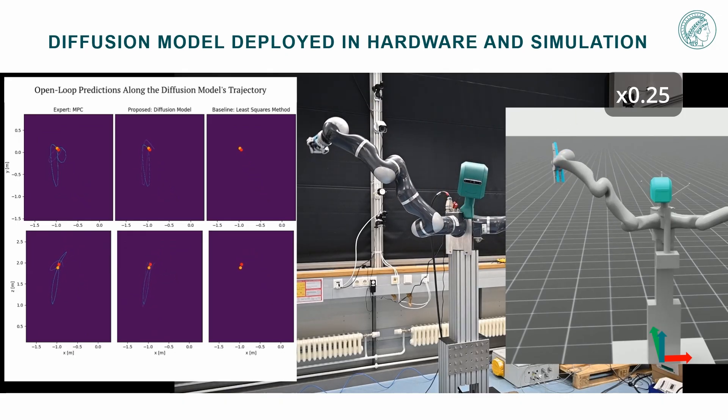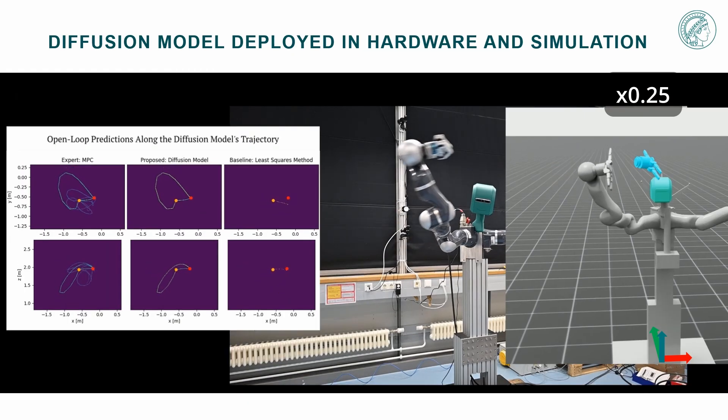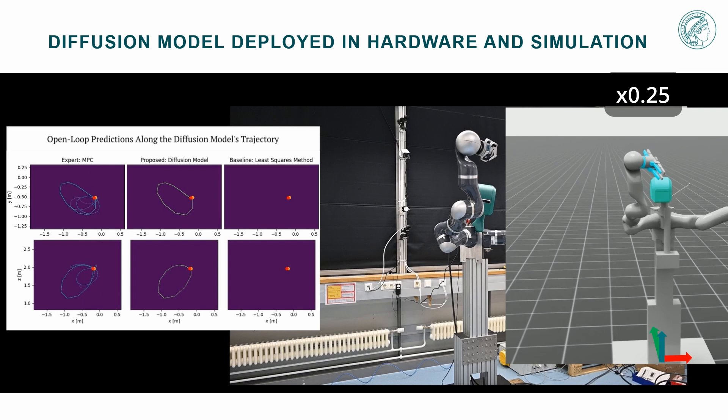We also explore various online sampling strategies to leverage the diffusion model's ability to capture multiple modes from the underlying MPC distribution. These strategies include clustering for democratic voting or selecting the mode with the minimum cost.